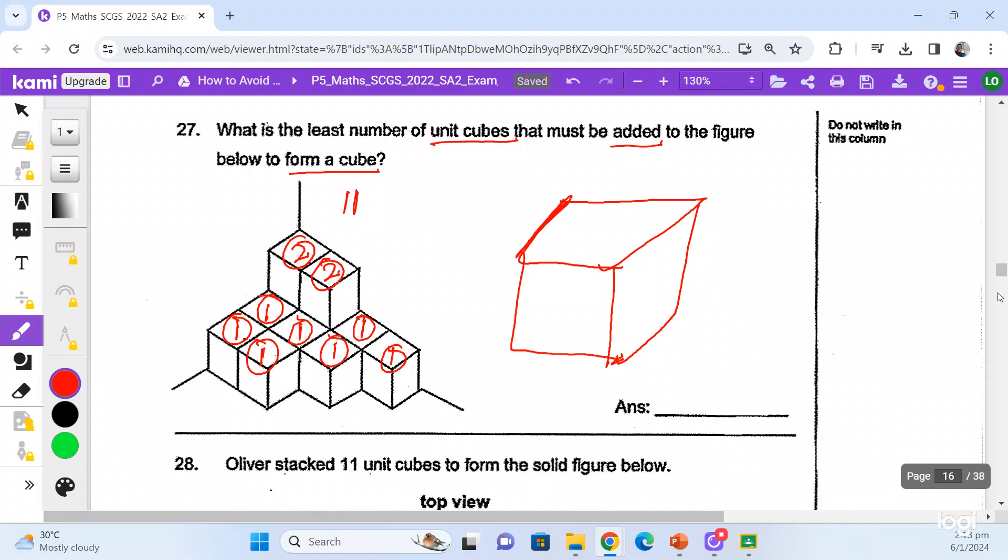You look at the solid figure on the left side. You can see that over here, there are how many cubes? There are three cubes. And then over here, there are four cubes. But how do you know that?